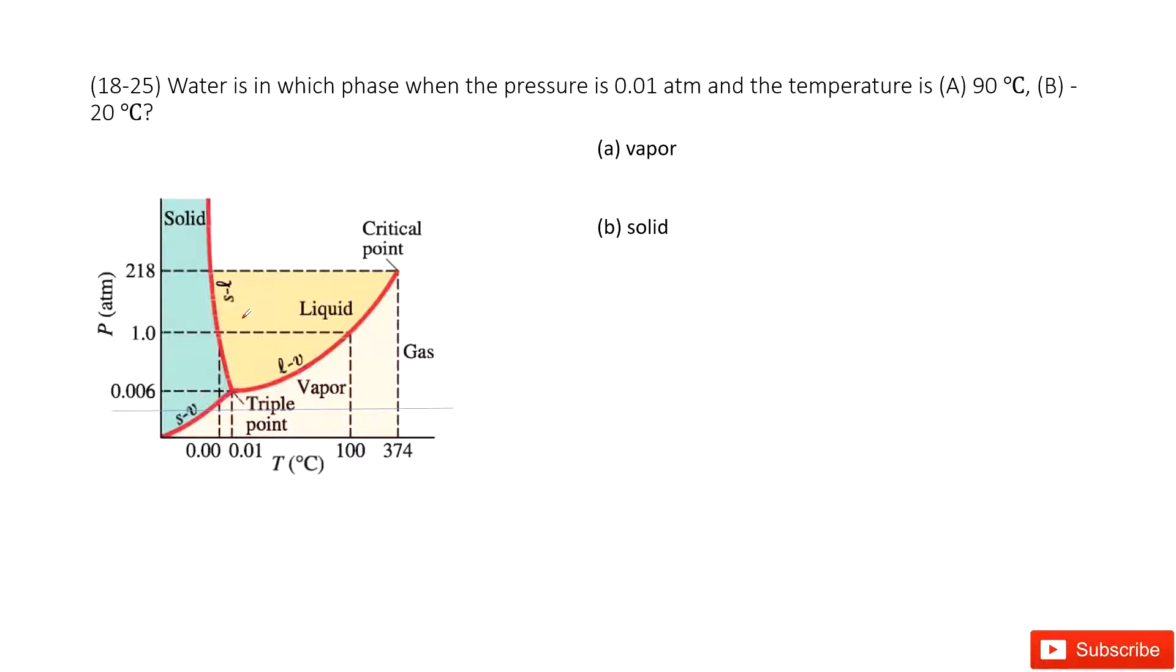So first we look at this P-T graph. The T is temperature, P is atm. Then it tells you the pressure is 0.01 atm. So we can draw a line, look like this one.